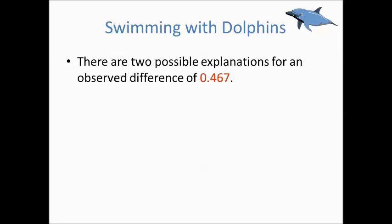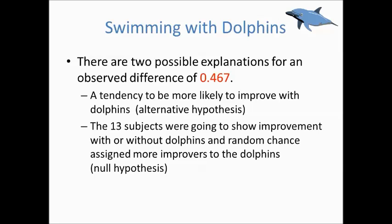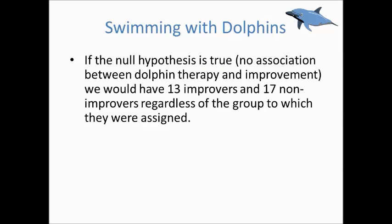Now there are two possible explanations for this observed difference. It may reflect a genuine tendency for depressed individuals to be more likely to improve if their activities include dolphins. In other words, the dolphins really helped. Perhaps, however, the 13 subjects were going to show substantial improvement, and the 17 were not, just by being participants in this experiment, regardless of which treatment group they were assigned to, and we just happened, by random chance alone, to assign more improvers to the dolphin therapy group.